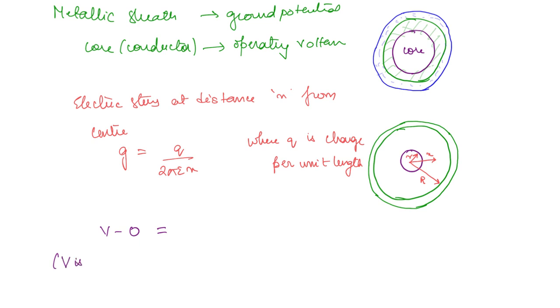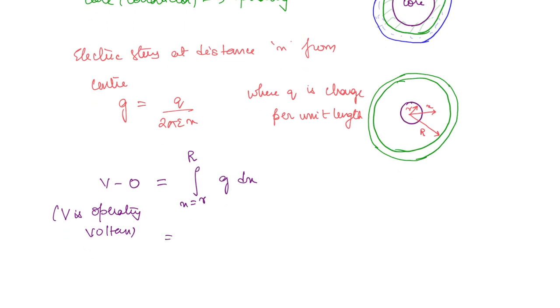V is operating voltage, so this is equal to integral from r to R of g dx. This you are going to get q by 2πε ln(R/r). This is the potential.